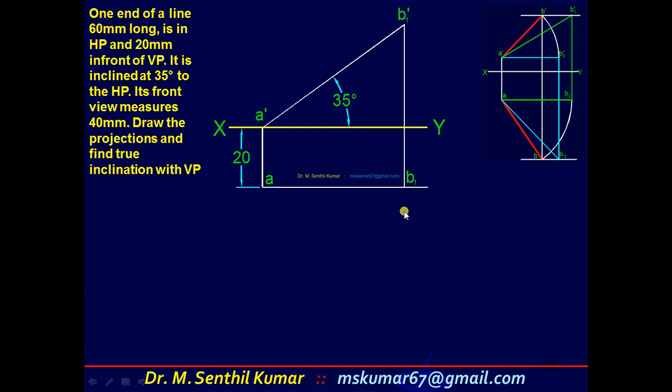The next step is draw a locus, and the front view length is given, it is 40. So set the compass to 40, the front view length. A dash as center, cut arc, get b dash. Now you obtained front view straight away. So front view is over.